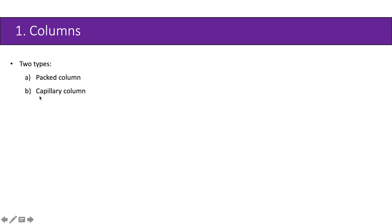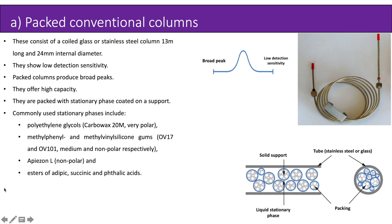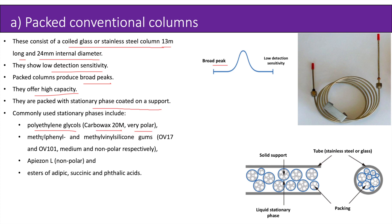Packed conventional columns consist of a coiled glass or stainless steel column, 1–3 meters long and 2–4 millimeters internal diameter. They show low detection sensitivity and produce broad peaks, but offer high capacity. They are packed with stationary phase coated on a support. Commonly used stationary phases include polyethylene glycols like Carbowax 20M (very polar), methylphenyl and methylvinyl silicone gums like OV-17 and OV-101 (medium and non-polar respectively), Apiezon L (non-polar), and esters of adipic, succinic, and phthalic acids.